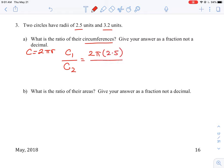Divided by the second circle, which is 2π times the radius of 3.2. So right away we see that the π's and the 2's will cancel, leaving us a fraction of 2.5 over 3.2.